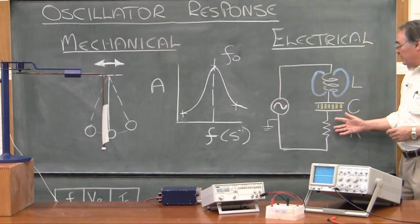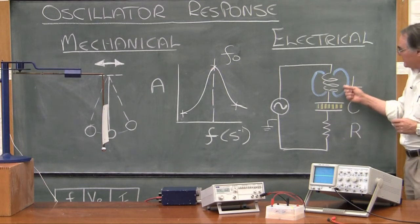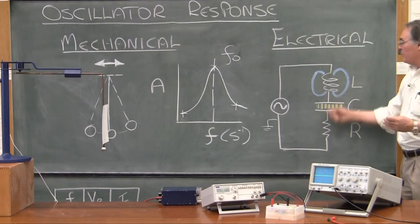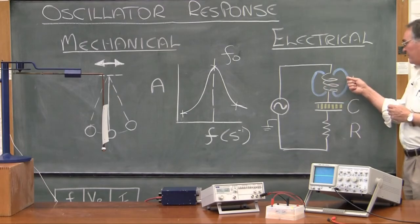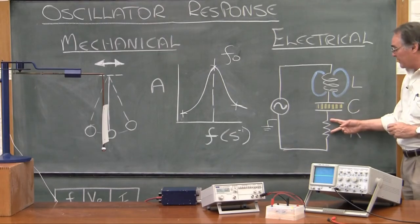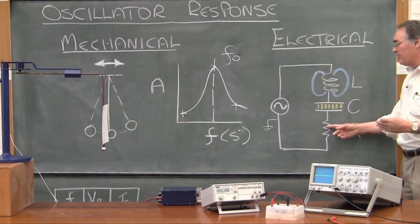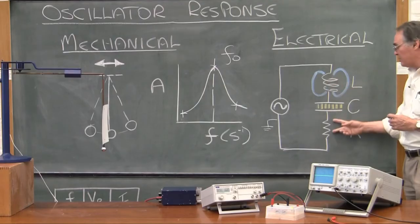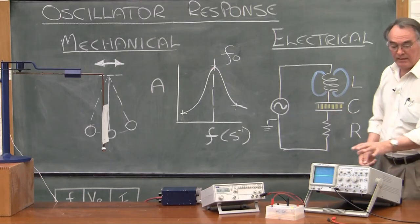I'm going to measure the voltage across this resistance. As the energy oscillates backwards and forwards between the magnetic field and the electric field, it does so with the current flowing in the circuit. When the current gets high, one field builds up; as the current drops off, the other field builds up. In order to measure the current, I can measure the voltage across this resistance. Using Ohm's law, I can determine the current, and if I know the current, I know the response. A high current implies a big response; a small current means a small response.